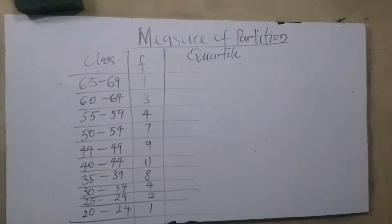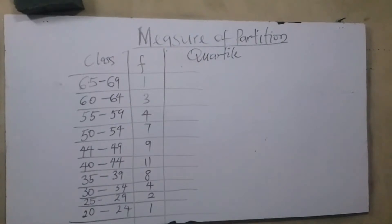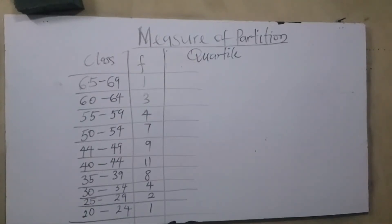We want to quickly look at measures of partition. We also want to use this to correct an impression, especially when you are looking for the median, which happens to be one of the measures of partition as well. Measures of partition are simply referred to as the techniques we normally use to distribute data sets into various equal parts, and the measures of partition are not far from quartiles, deciles, and percentiles.